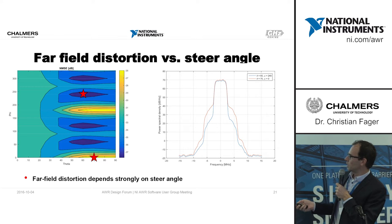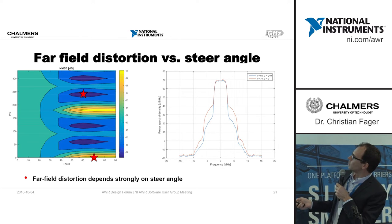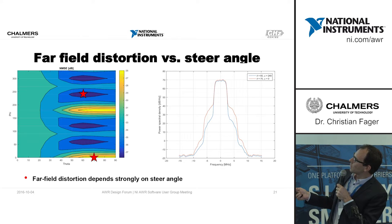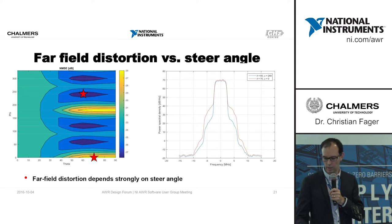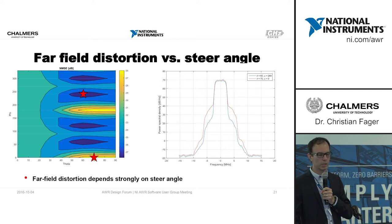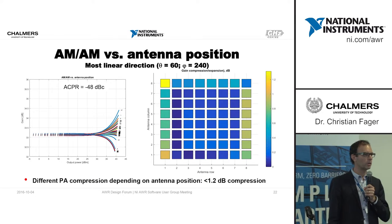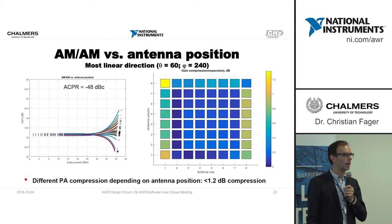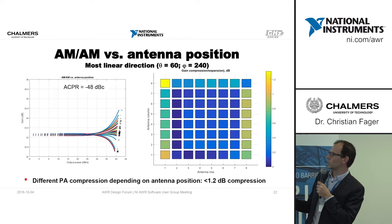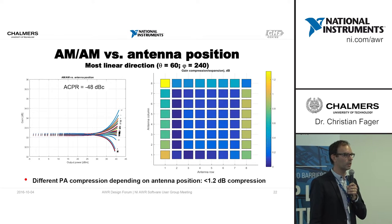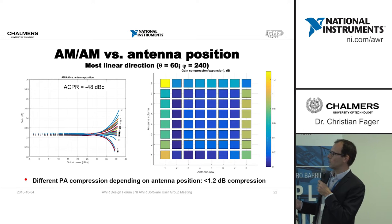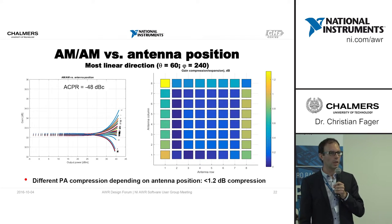Looking more closely at those directions: the worst direction is 70 degrees theta and 0 phi, while the best direction is around 240 degrees phi and 60-70 degrees theta. For each scan position we can look into each branch of the array transmitter and investigate how each PA behaves individually — each line corresponds to a specific power amplifier in the array.